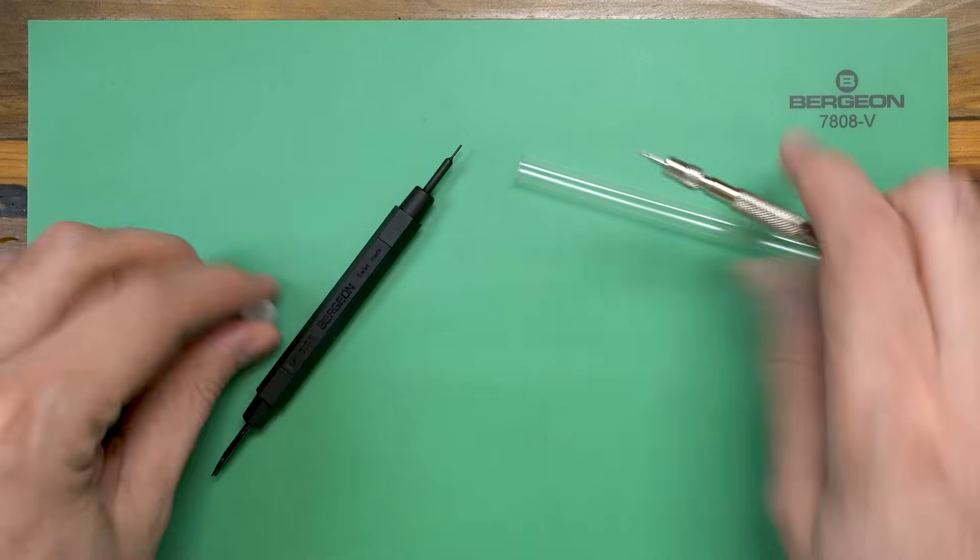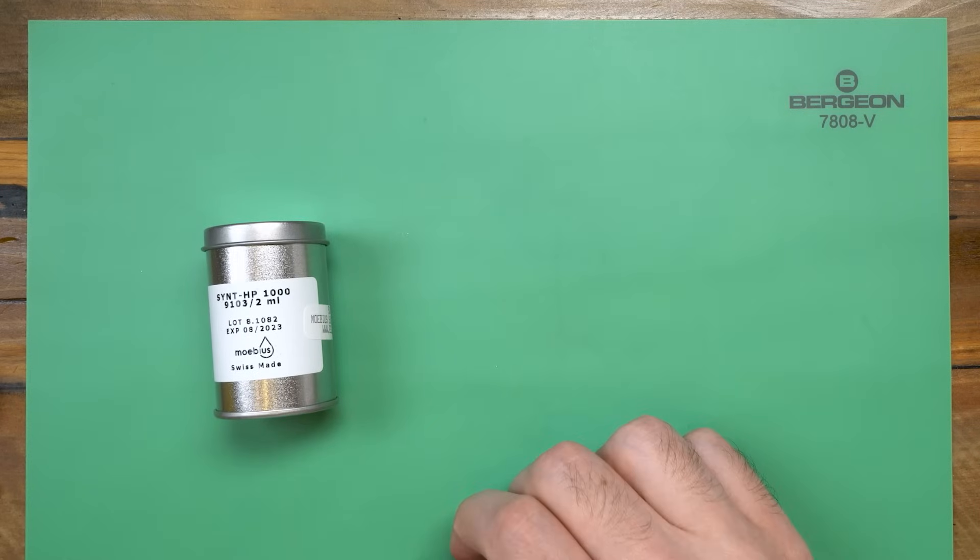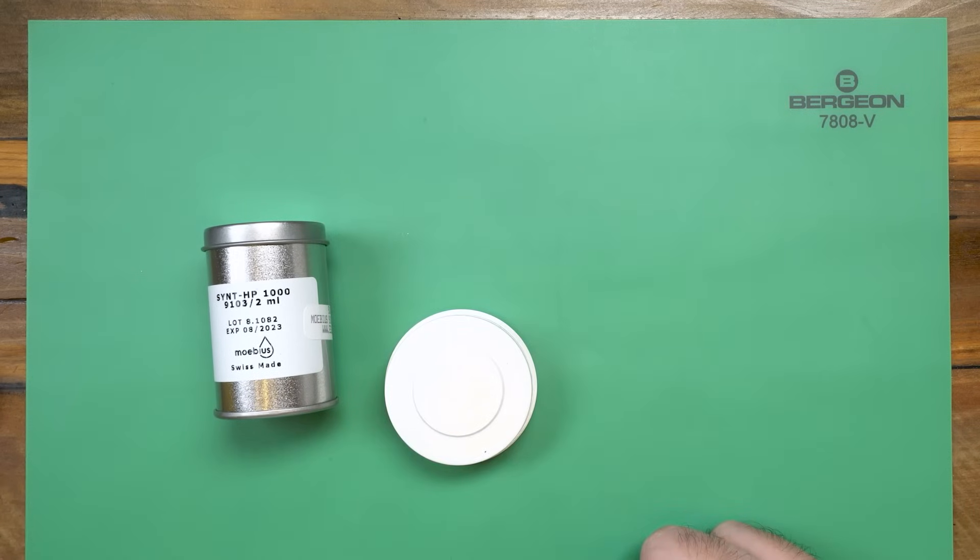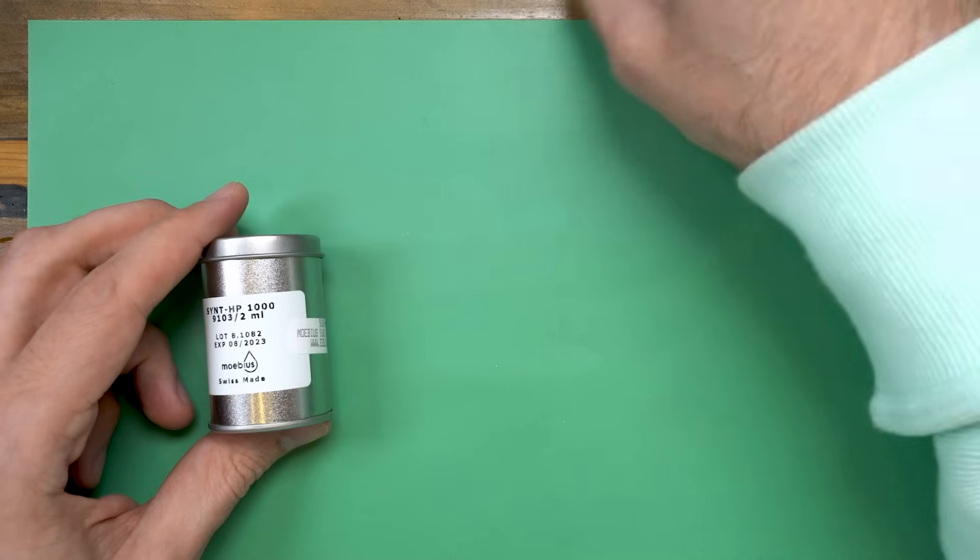Okay, in order to lubricate the watch after it's been cleaned, you'll need three things. You'll need oil, you'll need a place to keep the oil, and you'll need a way to apply the oil.